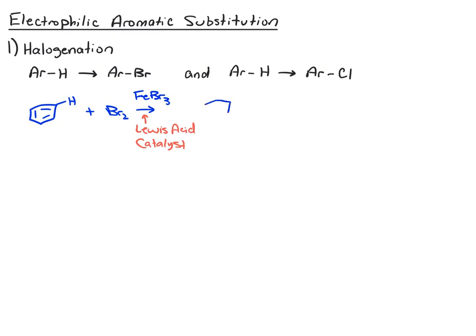And that catalyzes this reaction so that the bromine is reactive enough as an electrophile to replace the hydrogen. So the product will be the aryl bromide. The byproduct, as we'll see in the mechanism, is HBr. The catalyst gets involved, but it comes out unchanged during the course of the reaction. For the bromination, you need iron tribromide as a catalyst. For the chlorination, we'll use iron trichloride as the catalyst.